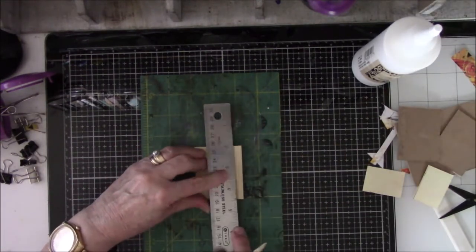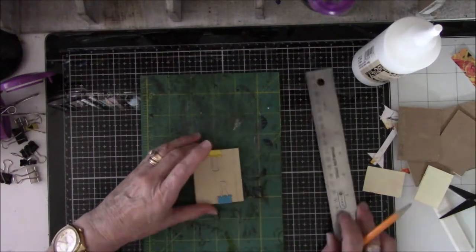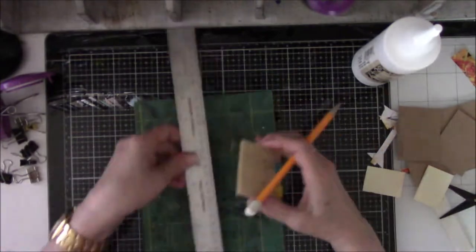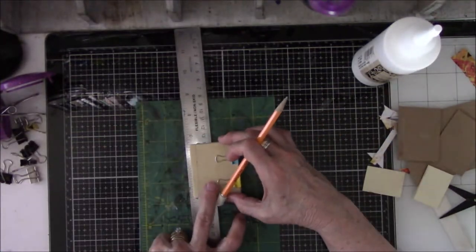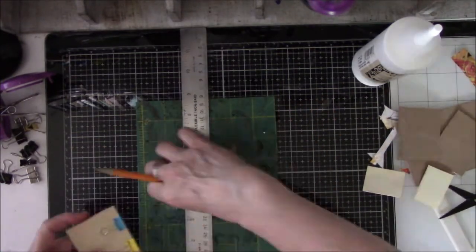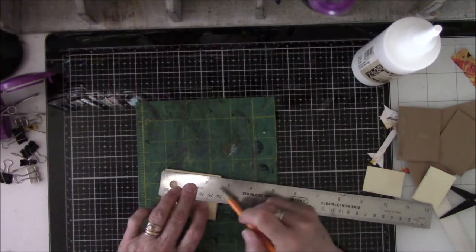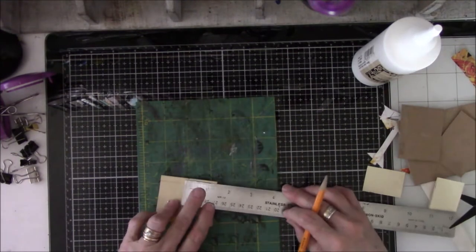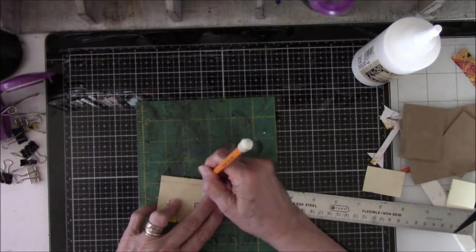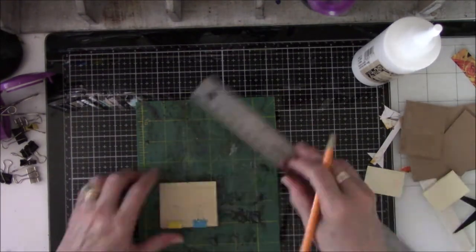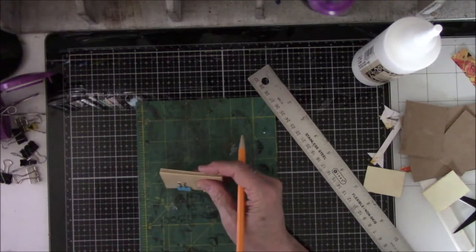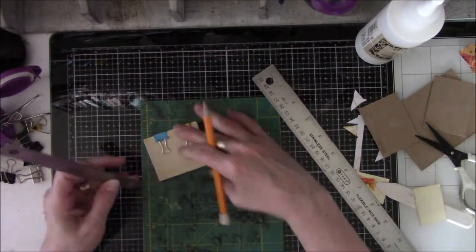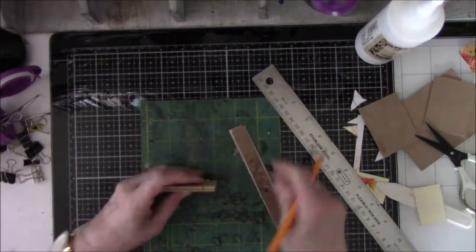Actually not the cover - I'm measuring to see where to put the eyelets for the cover and body because I'm going to coptic stitch this book. This one will be a whole lot easier than the big one. I think I did half an inch from each end, half an inch from the top and bottom, and then I measured the space in between and found the middle.